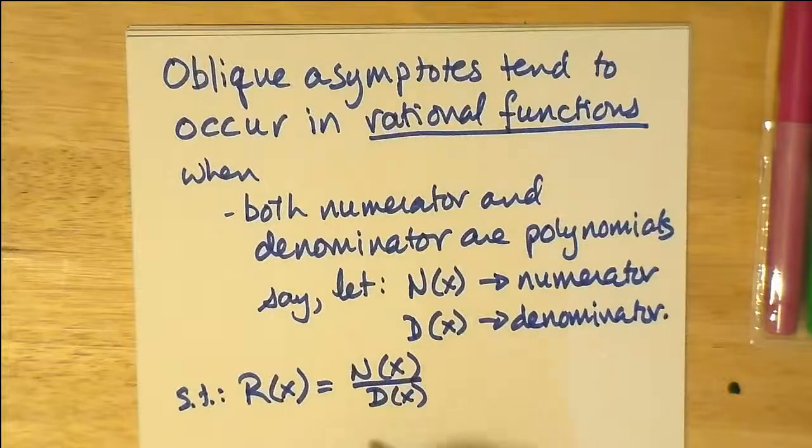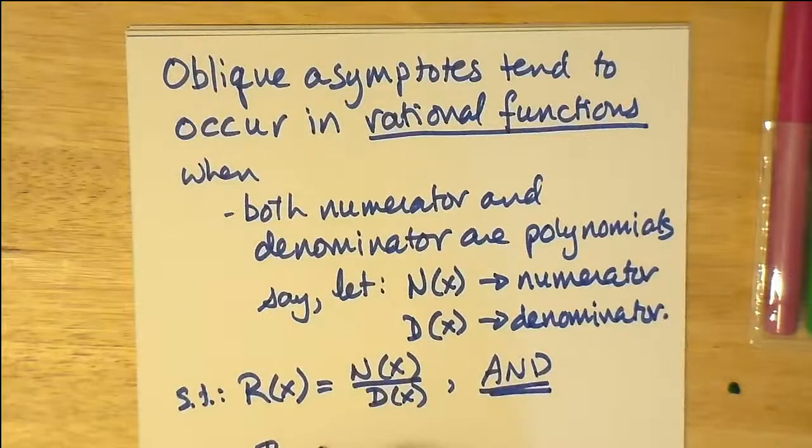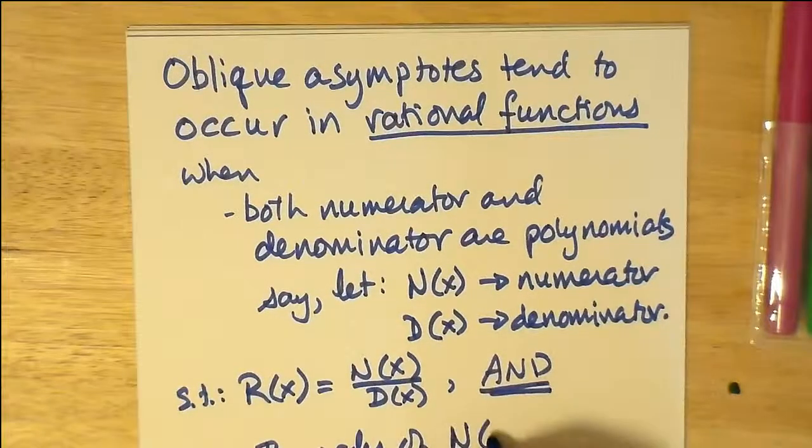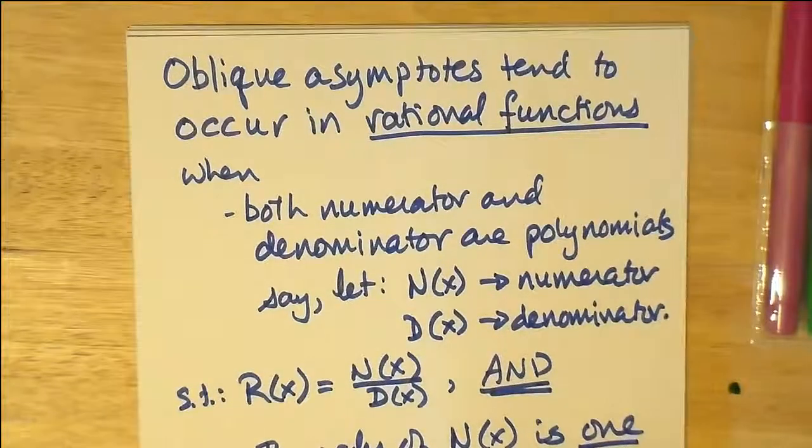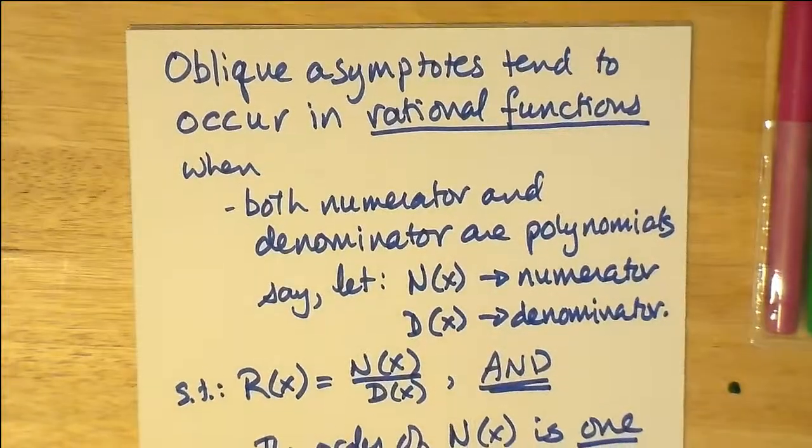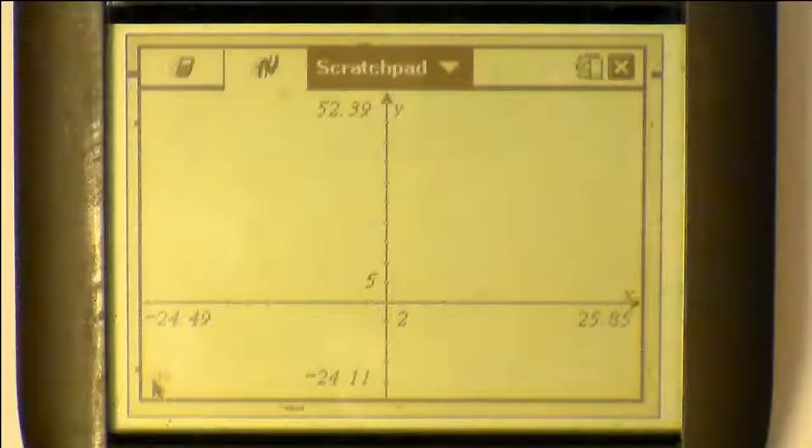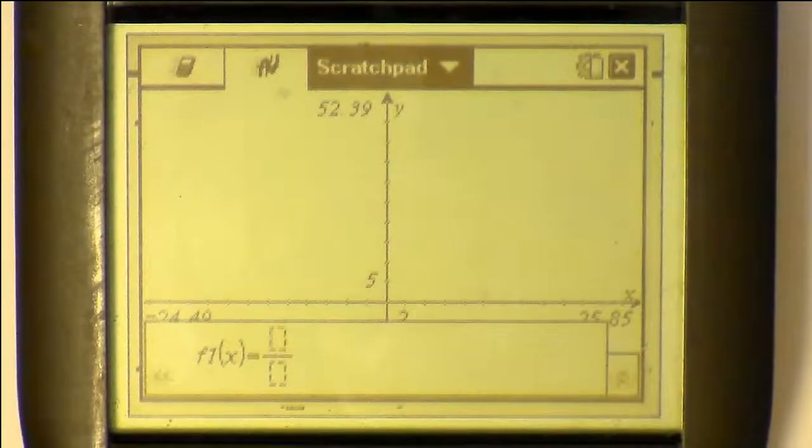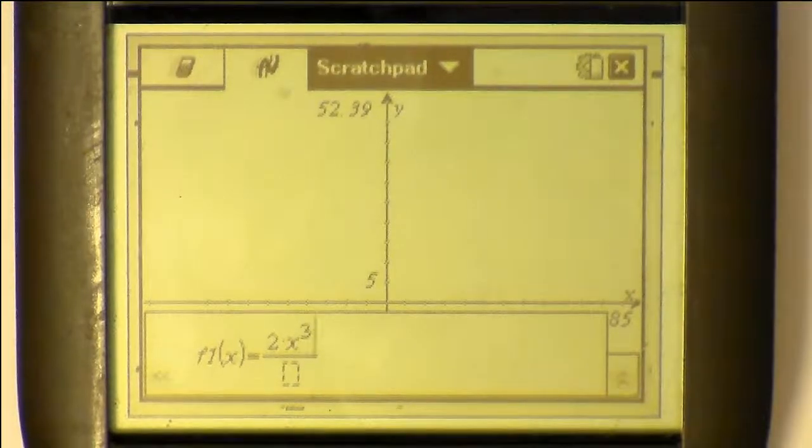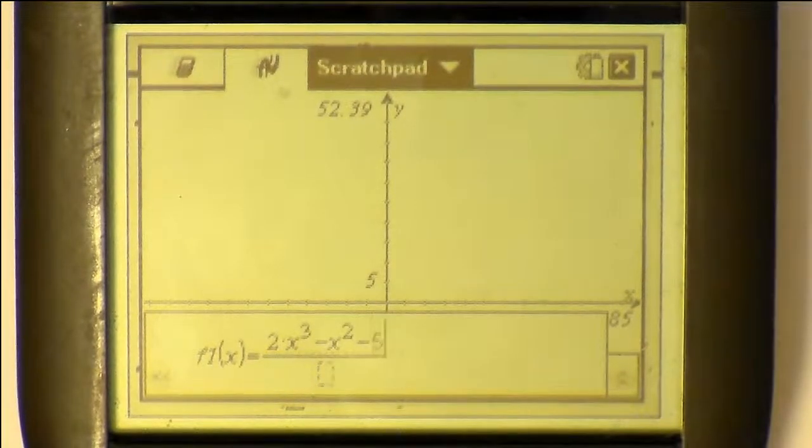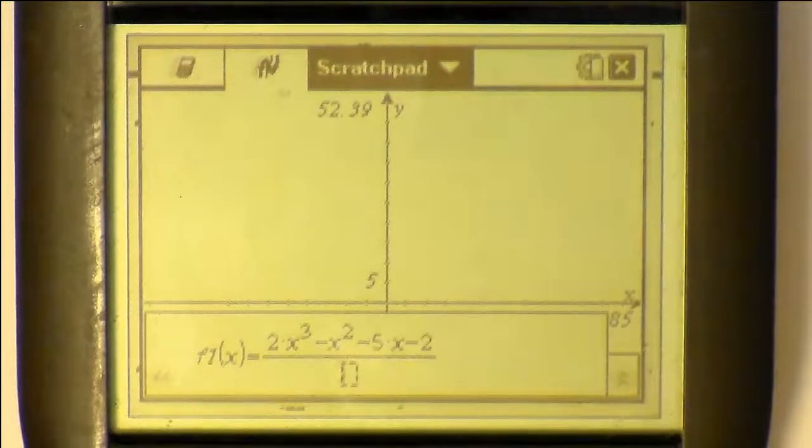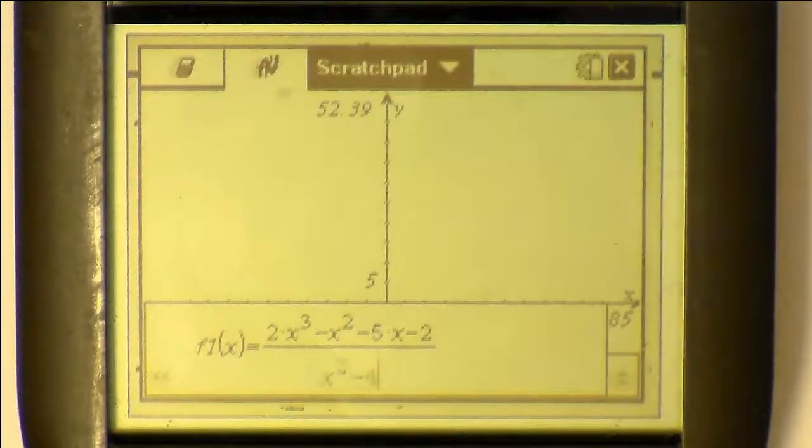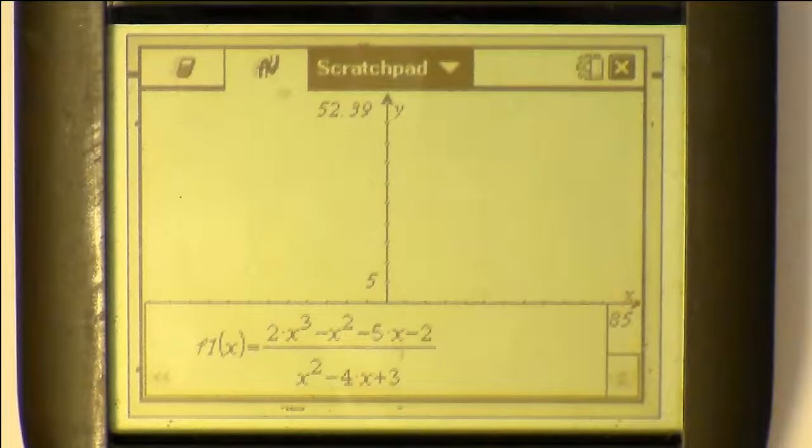So let's enter a function: 2x cubed minus x squared minus 5x minus 2, all divided by x squared minus 4x plus 3. So this will generate an oblique asymptote.